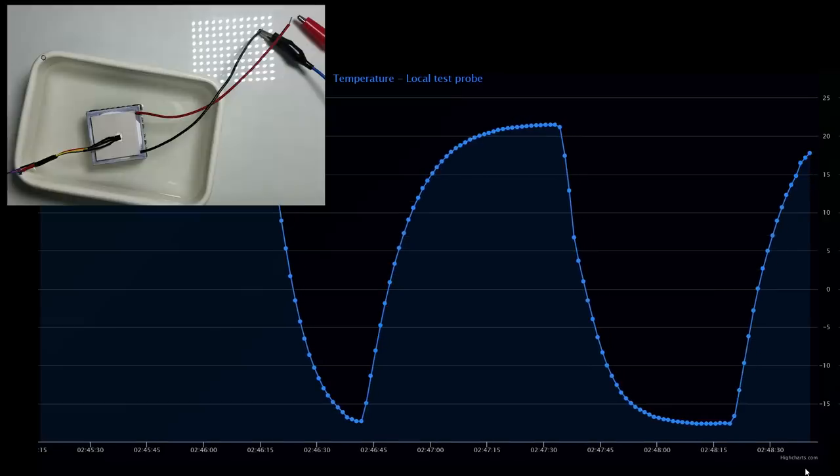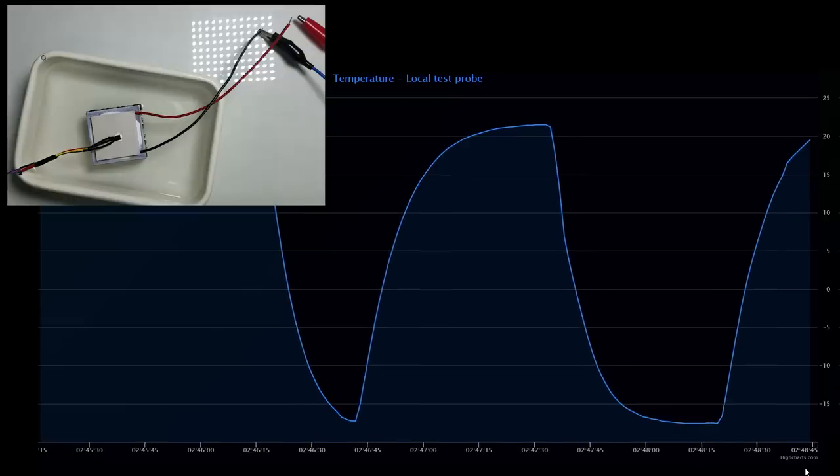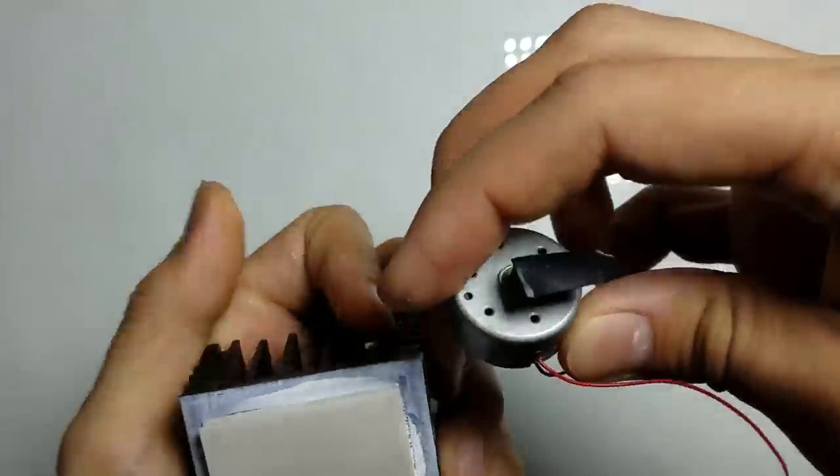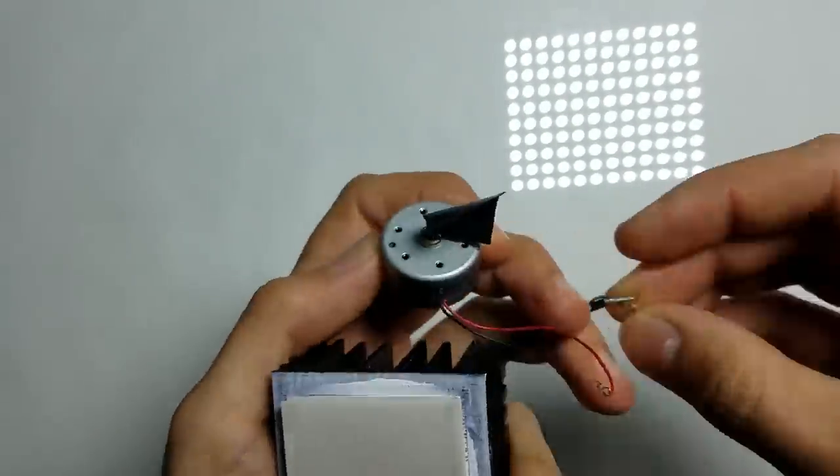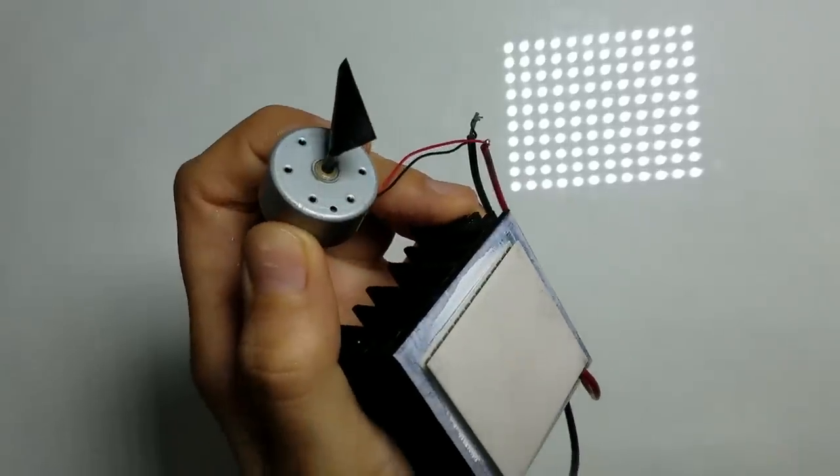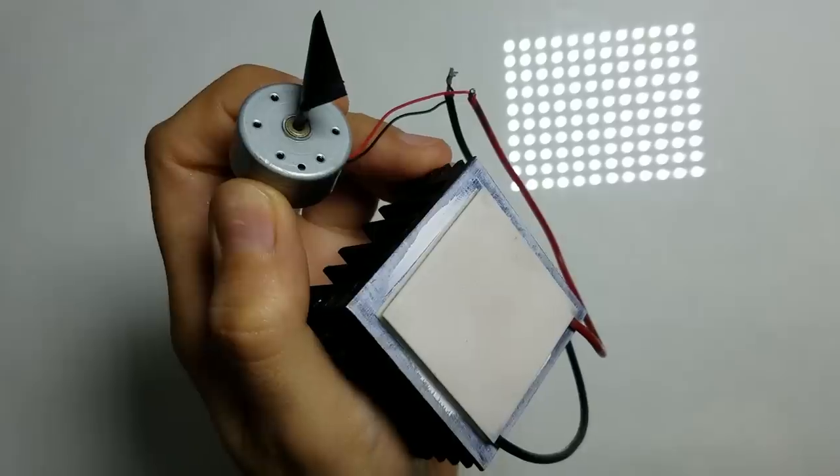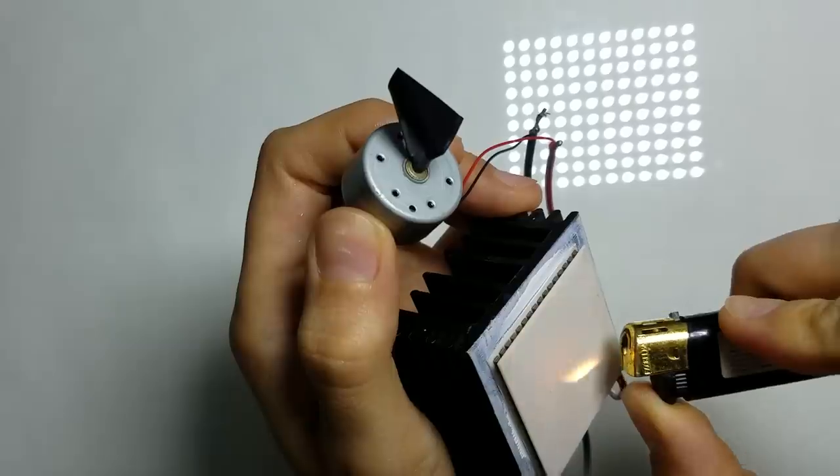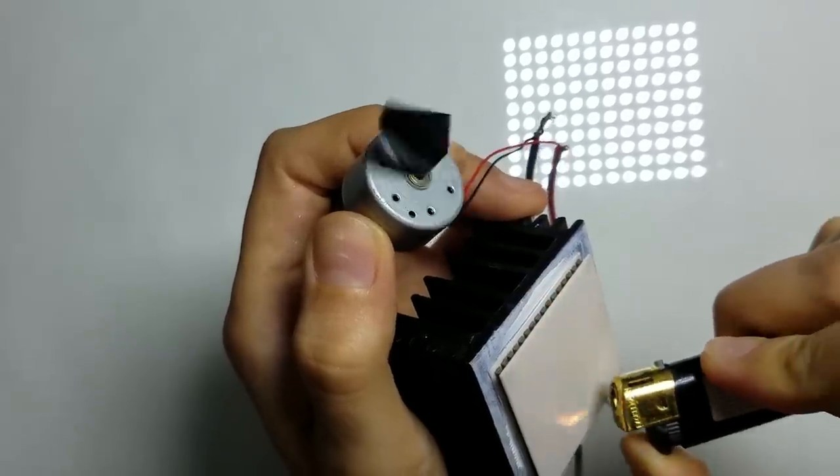But the really interesting thing about this device, that it can work in reverse. We just need to make temperature difference. And that is what I'm going to demonstrate now. For the first demonstration, I'll connect a small 5 volt DC motor. To make temperature difference, I'll use a lighter. Pretty cool, isn't it?